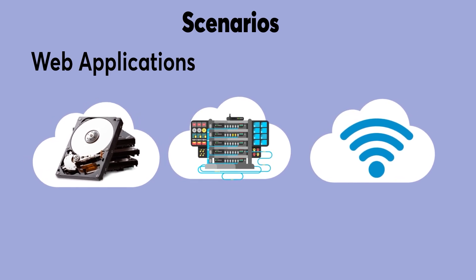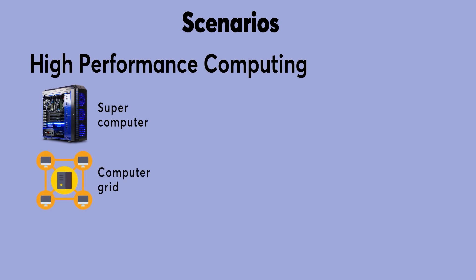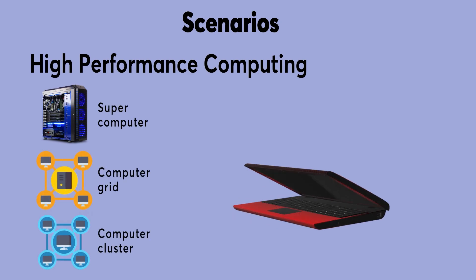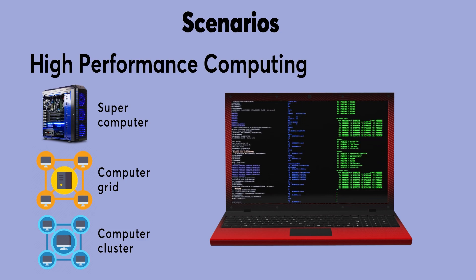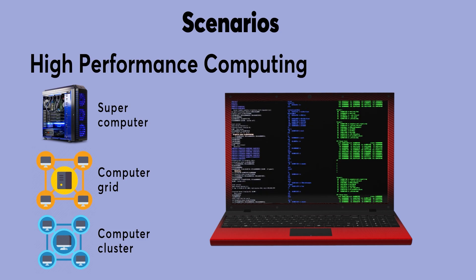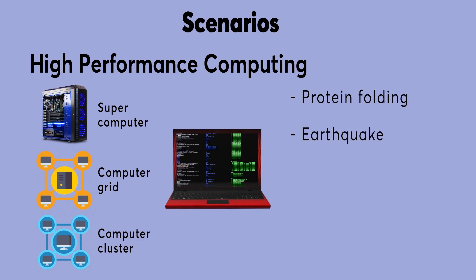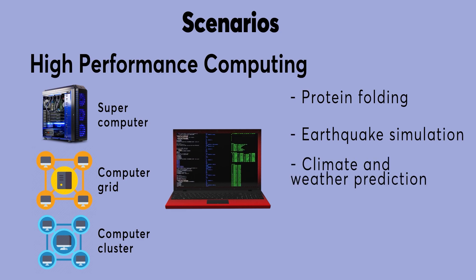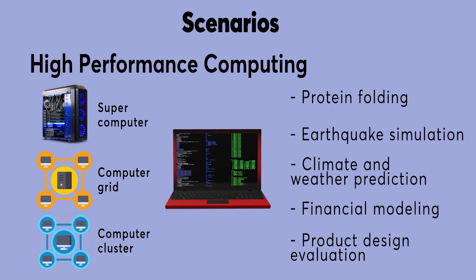For big data use cases, high-performance computing on supercomputers, computer grids, or computer clusters helps solve complex problems involving millions of variables or calculations. Examples include protein folding and earthquake simulations, climate and weather predictions, financial modeling, and product design evaluations.